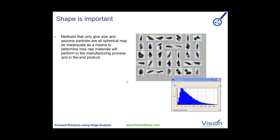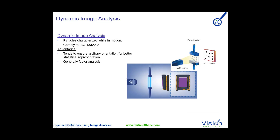Another nice feature with image analysis, which is a very up-and-coming technique, is the fact that you can actually look at the actual images of the particles. Not only does it give you 30 to 32 shape measures, it will also give you all the images of the particles which you can use to validate your process. What we're talking about here is dynamic image analysis, where particles are in motion — you get particles moving very fast, many at a time on the screen, and you're doing the measurements live and in real time.